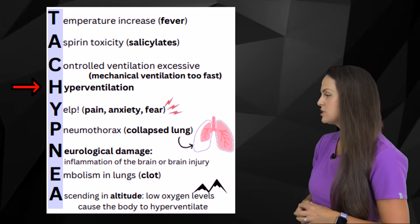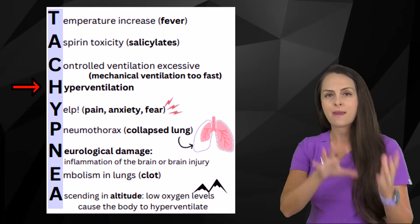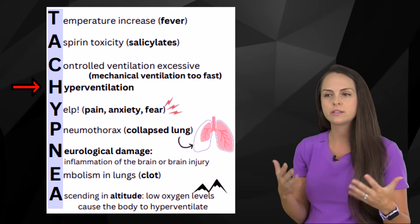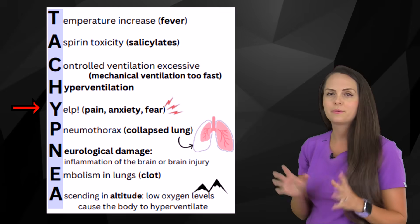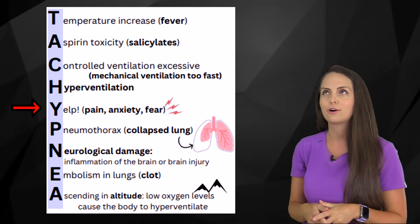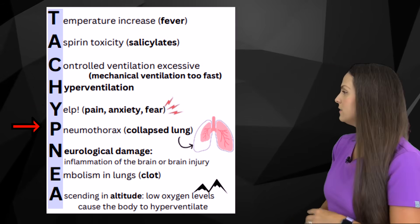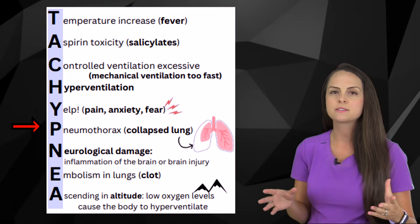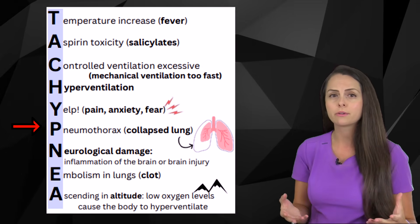H is for hyperventilation. Whenever patients have a lot of anxiety or a panic attack, notice they breathe very fast — this can cause respiratory alkalosis. Y is for yelp — they have pain. Whenever a patient is in pain it affects their vital signs: heart rate goes up, blood pressure goes up, along with their respiratory rate. P is for pneumothorax — a collapsed lung — which is definitely going to alter gas exchange and affect how well you can get rid of carbon dioxide.